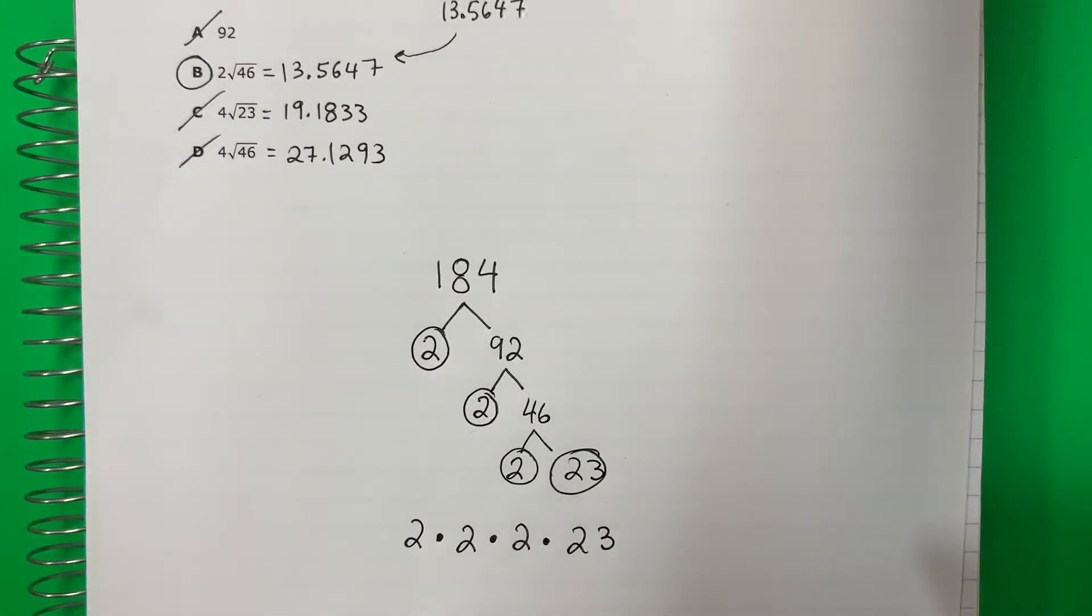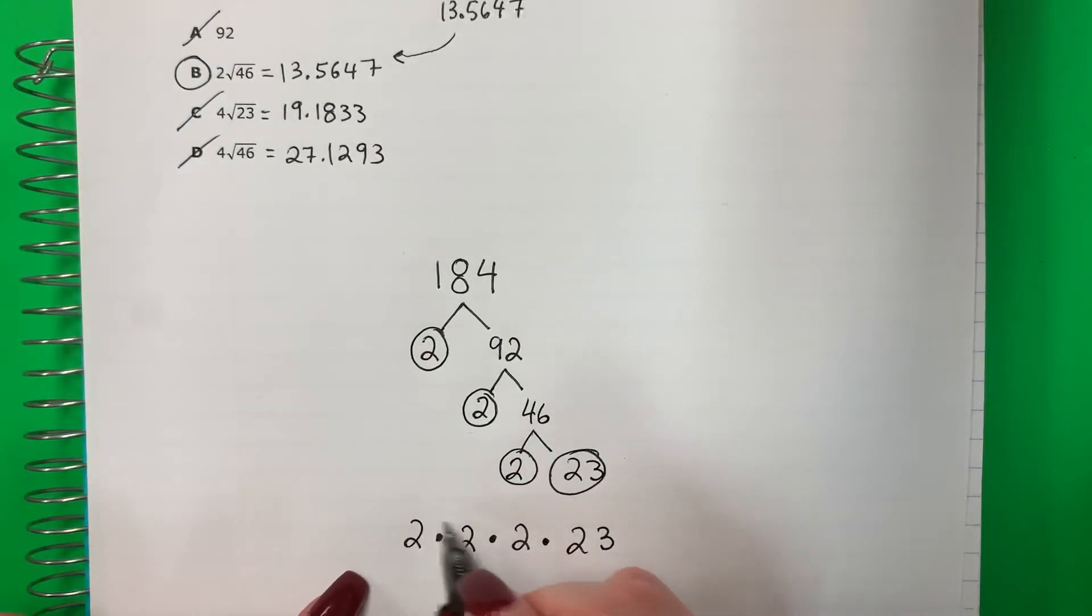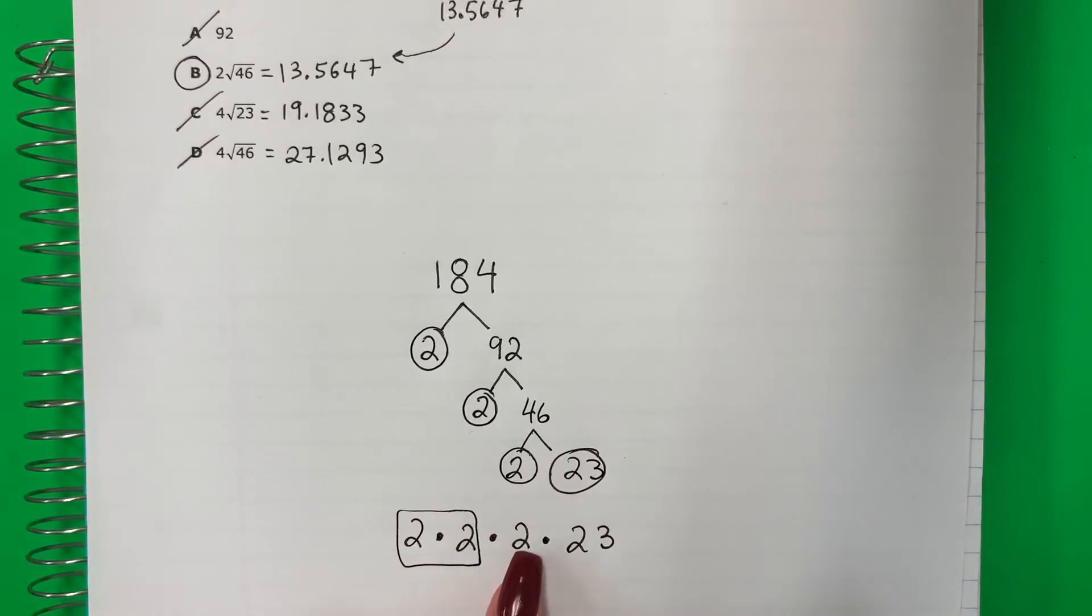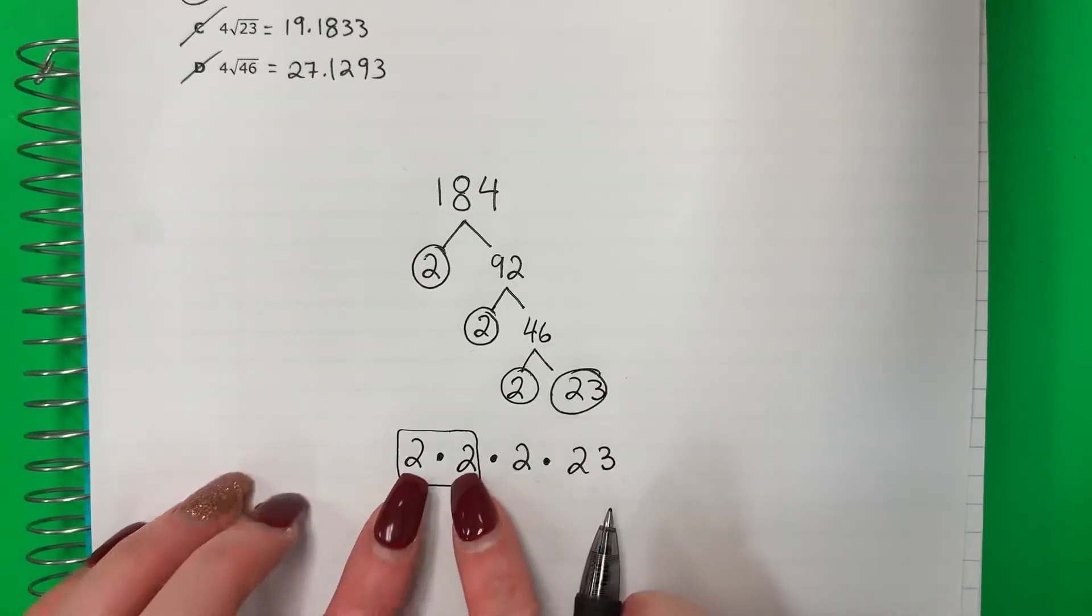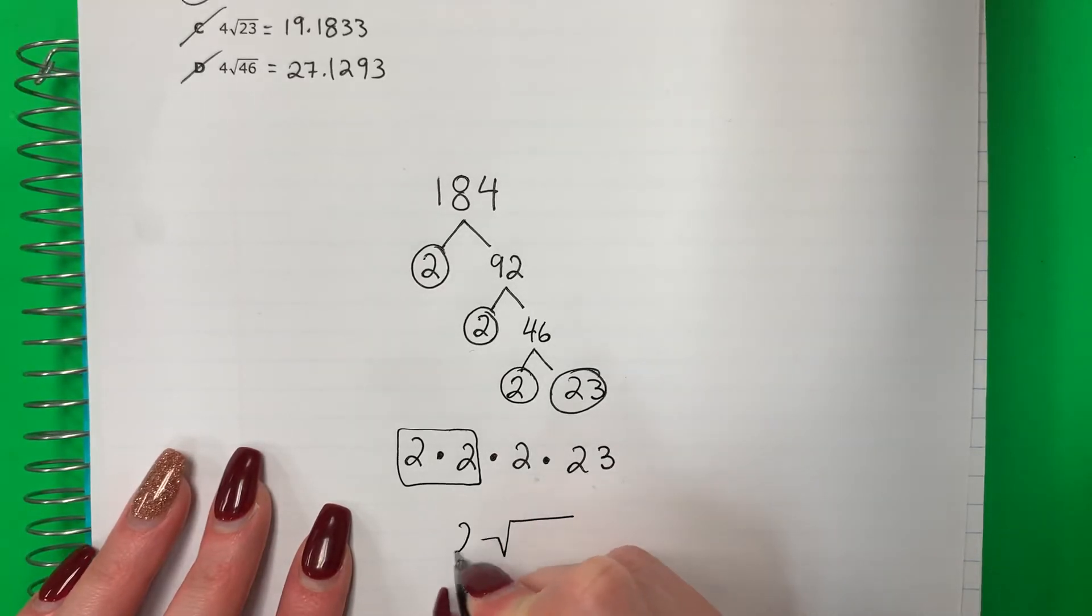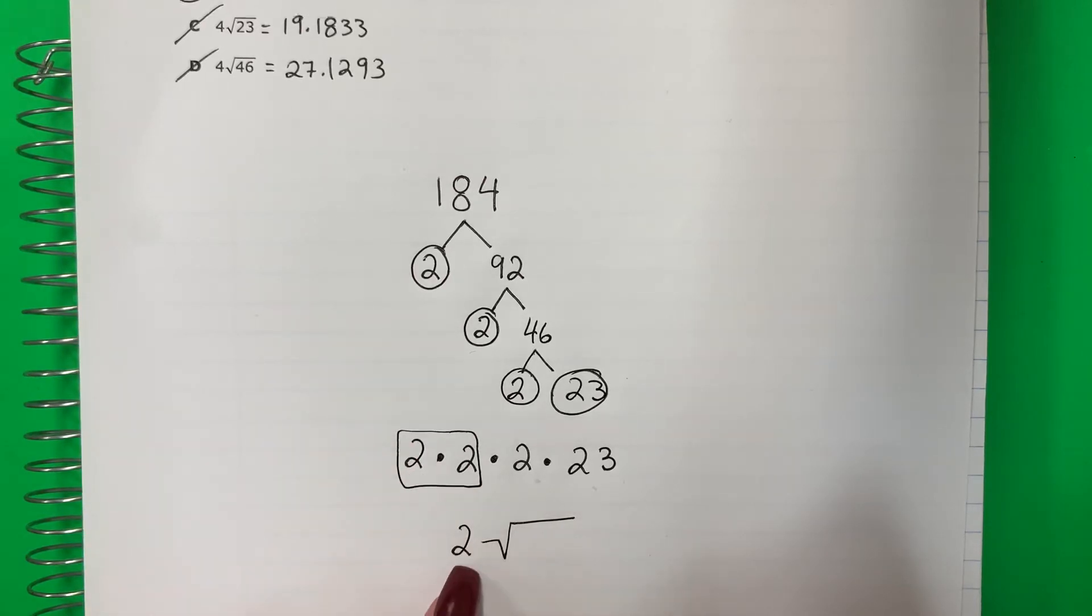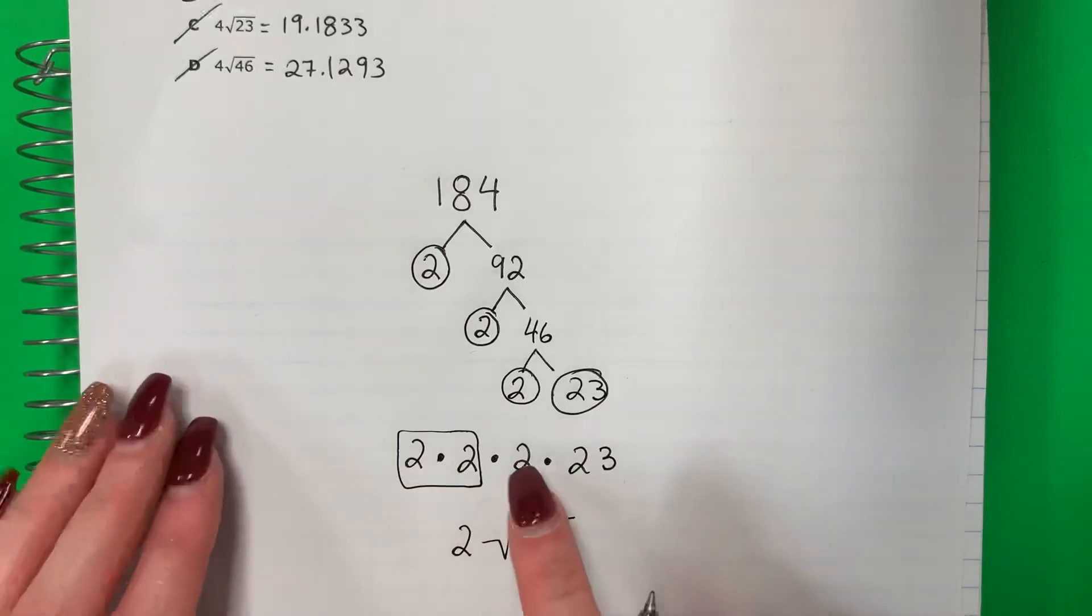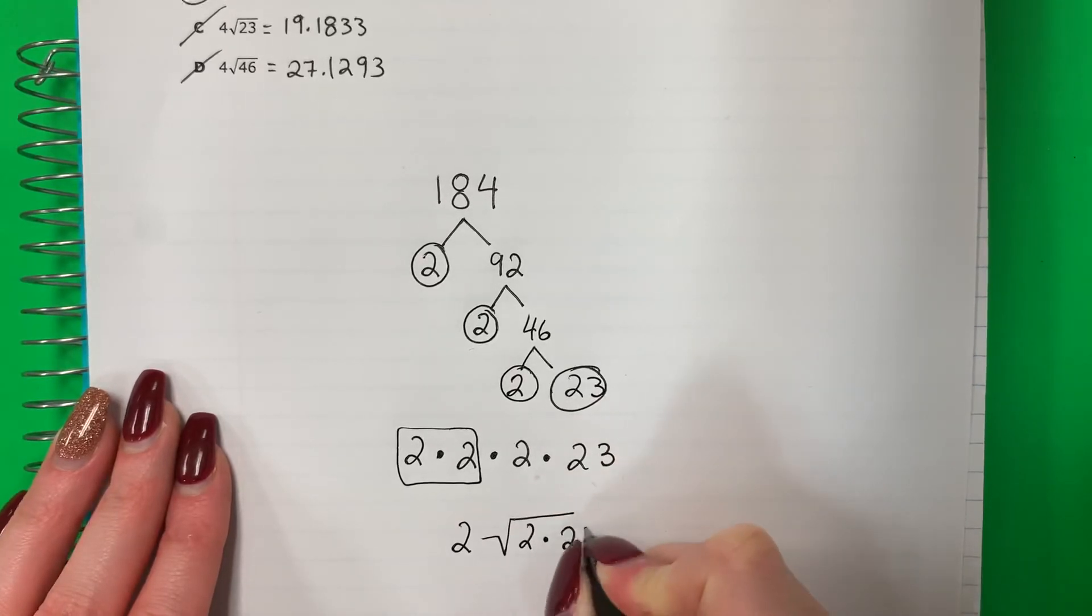Now let's find the pairs. Ahora vamos a encontrar los pares. I have two twos, so I have this. Is there another two? ¿Hay una otra dos? No. Is there another 23? ¿Hay una otra veintitrés? No. So the ones that are the pairs, los pares, I'm going to put them outside. Voy a poner afuera. Outside the square root. If it's a pair, you put it one time outside. Si es un par, vas a poner afuera una vez. The non-pares, they go inside. Los que son únicos, va adentro. So 2 times 23.